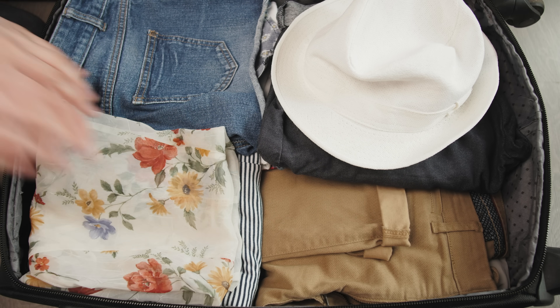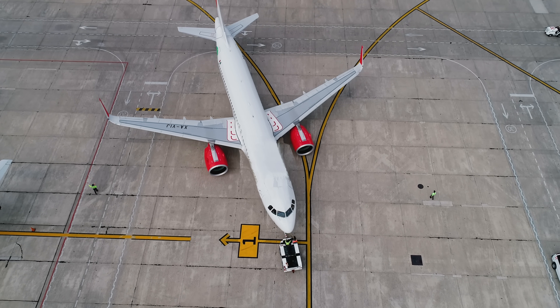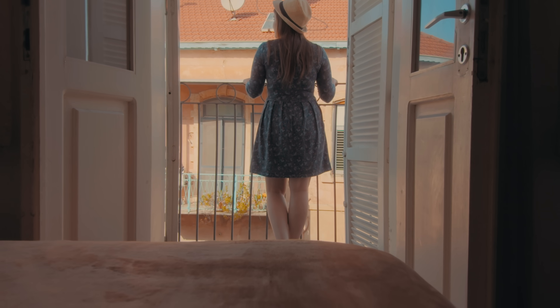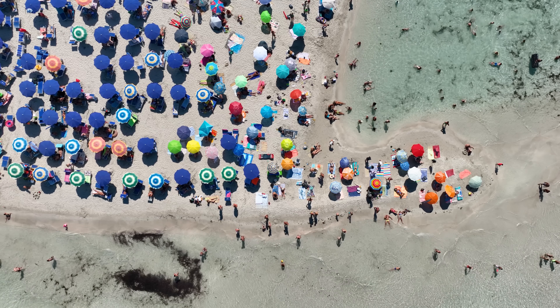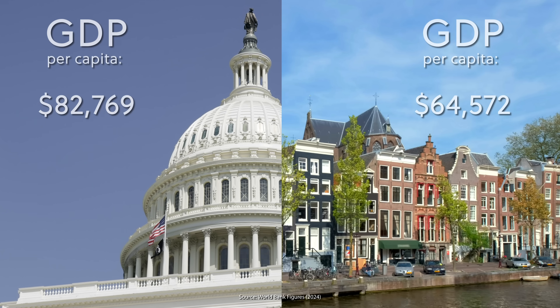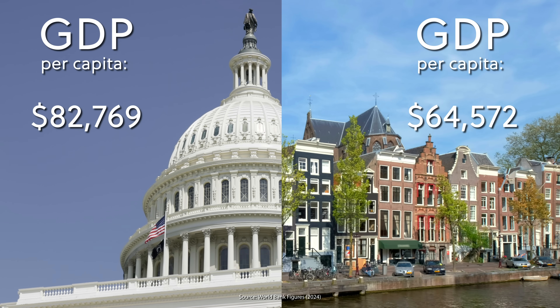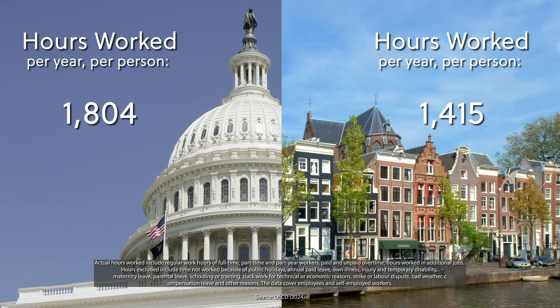Moreover, in narrowly focusing on income, GDP per capita leaves out the value of leisure and enjoying the life you worked hard for, which can distort our conception of the relative flourishing of countries. For instance, while the U.S. GDP per capita is roughly 15% higher than the Netherlands, American workers work 26% more hours than their Dutch counterparts. Which country do you think is happier, or spends more time on vacations, or gets to spend more time bonding with their children? It's not the United States.